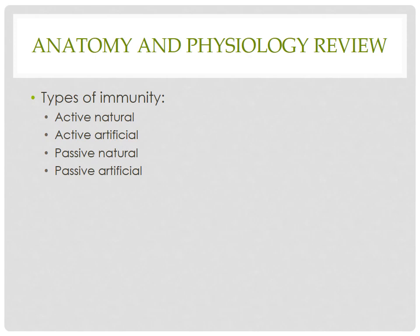From natural resistance, we can derive that some races, species, or particular groups of populations may be more resistant to certain diseases than others. This is a small overview of types of immunity, and we need to know what those types are as listed.